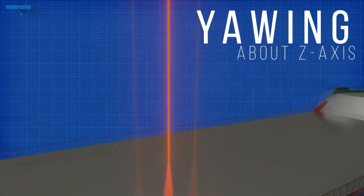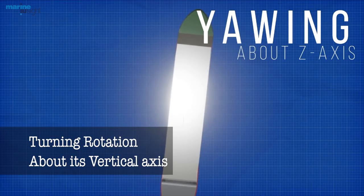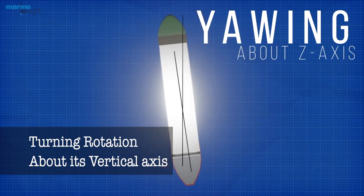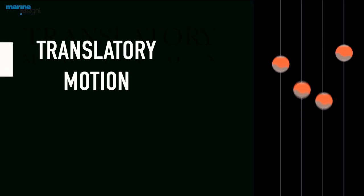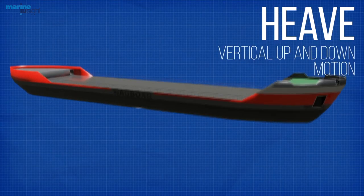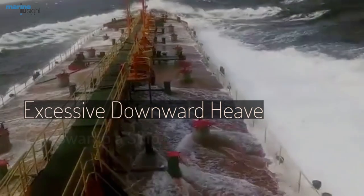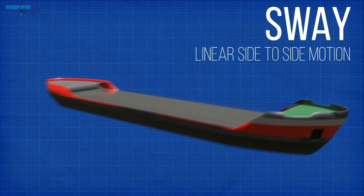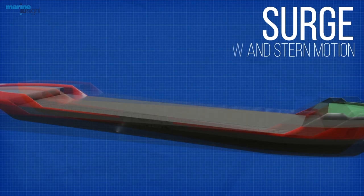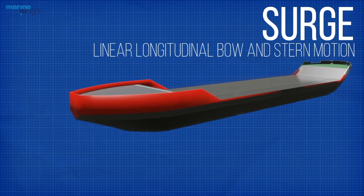Yawing is defined as the turning rotation of a vessel about its vertical or z-axis. An offset or deviation from normal on this axis is referred to as deviation or set. Heave is the linear vertical or up and down motion of the ship. Excessive downward heave can swamp a ship. Swaying motion is the linear transverse or side to side motion of the vessel. Surge is the linear longitudinal bow and stern motion imparted by maritime conditions.